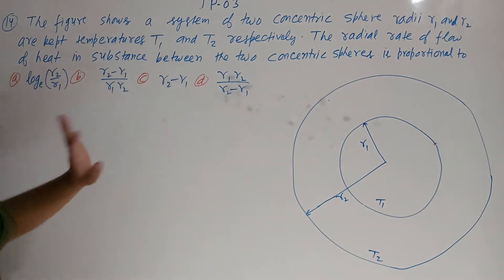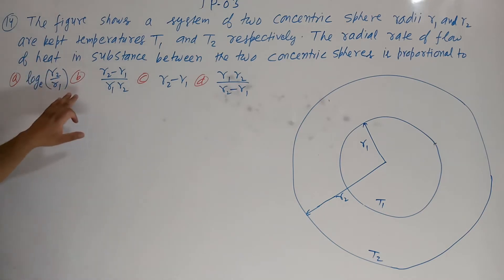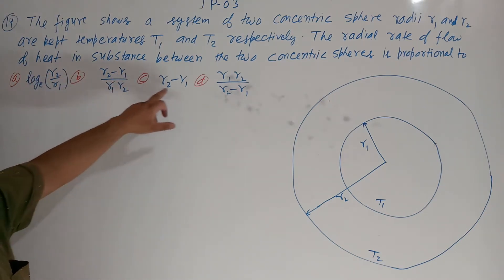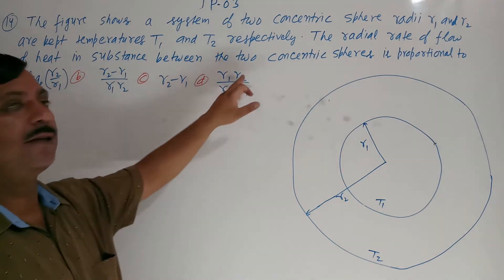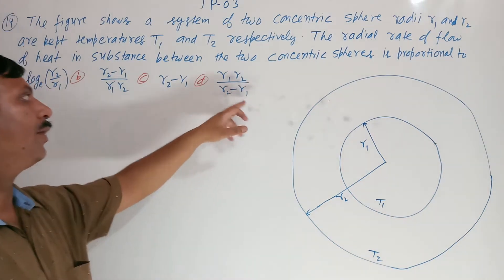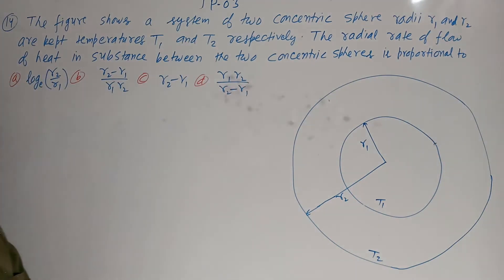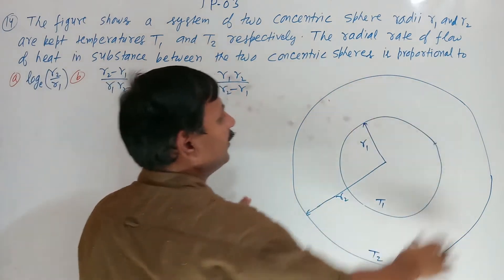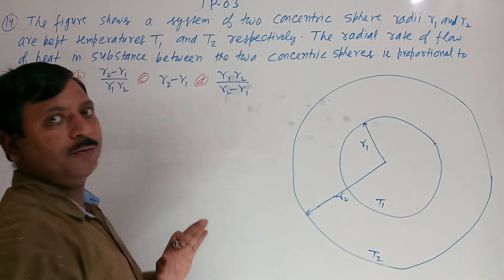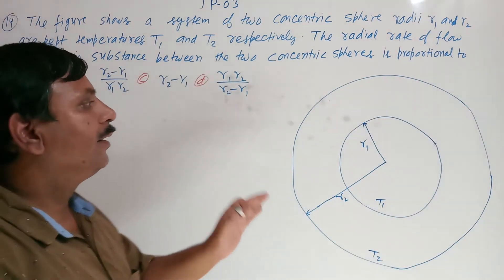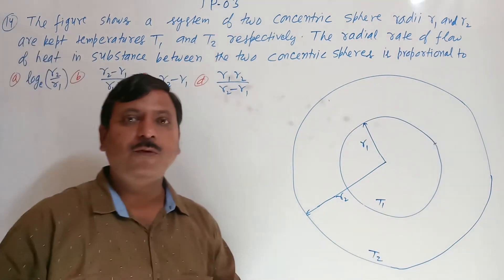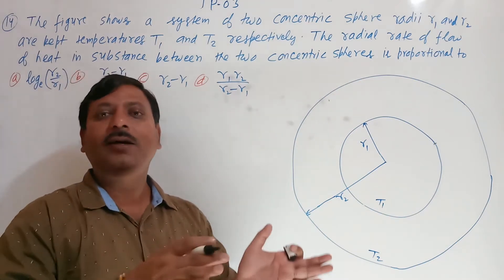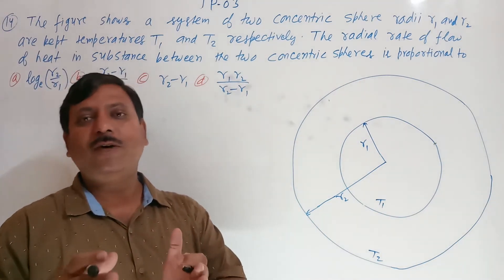Four options are given. Now we have to find the radial flow. We know that the rate of flow of heat is directly proportional to area. The formula we know is DQ upon DT equals K times A times DT upon dx — that is, the temperature gradient.